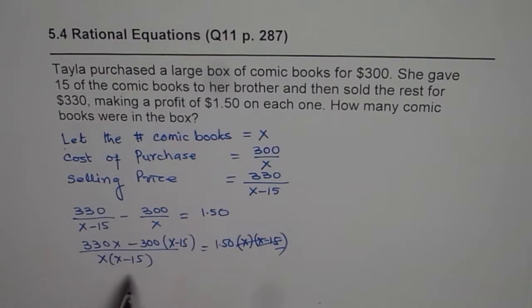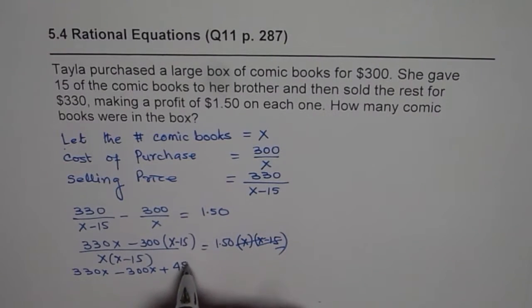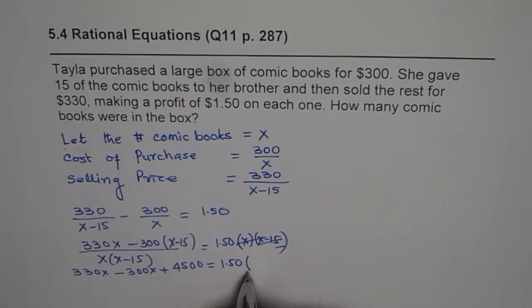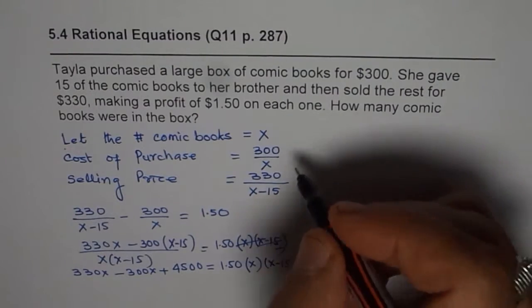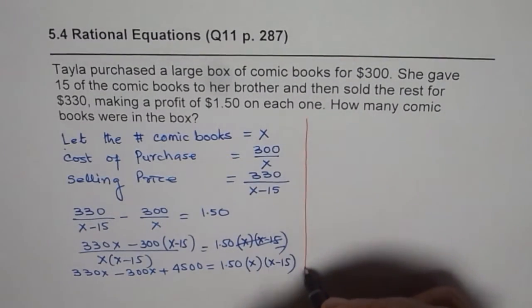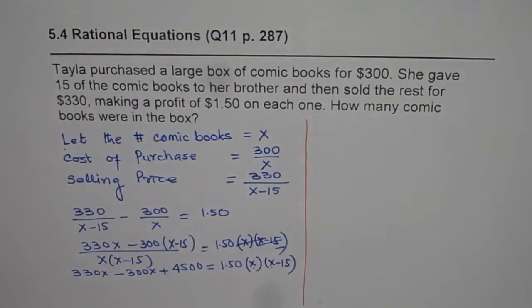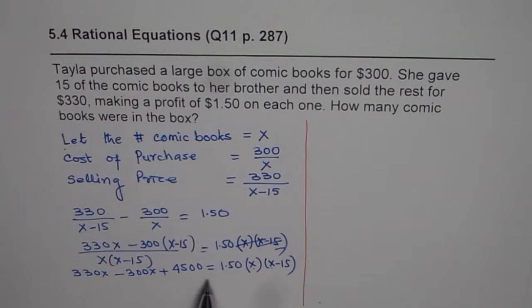Let's do it now. So 330x minus 300x, when you multiply, minus minus becomes positive. 3 times 15 is 45, so 4500 equals 1.50 times x times x minus 15. So we get a quadratic equation which we'll solve. x times x will give us the quadratic equation.